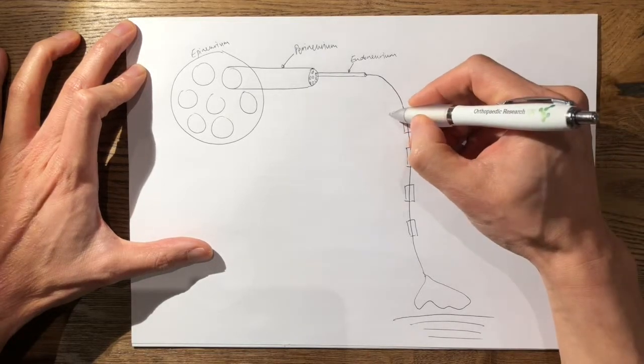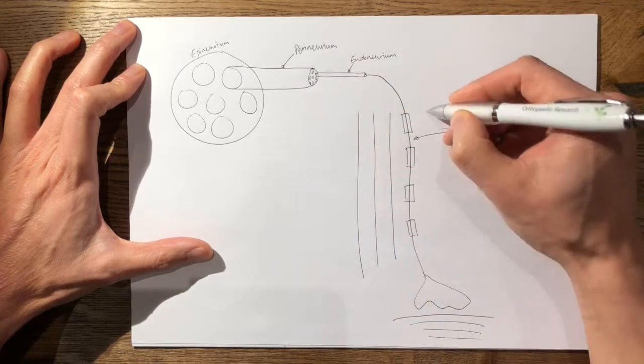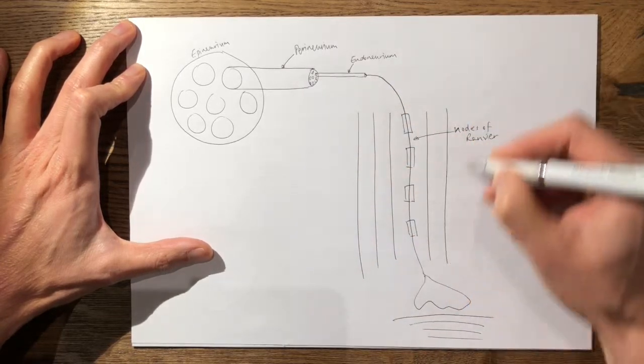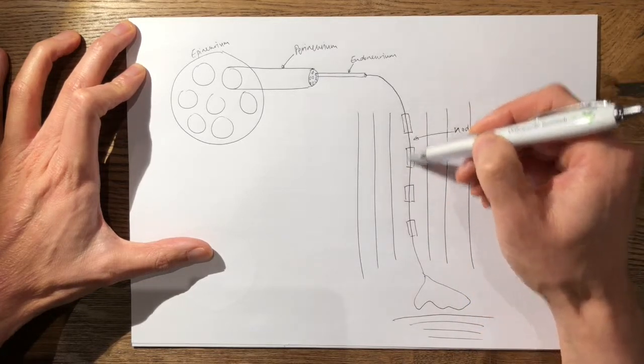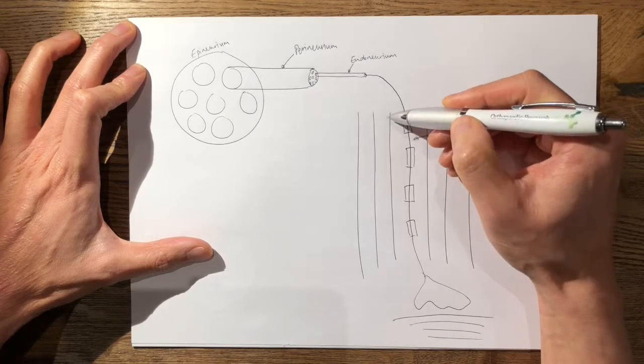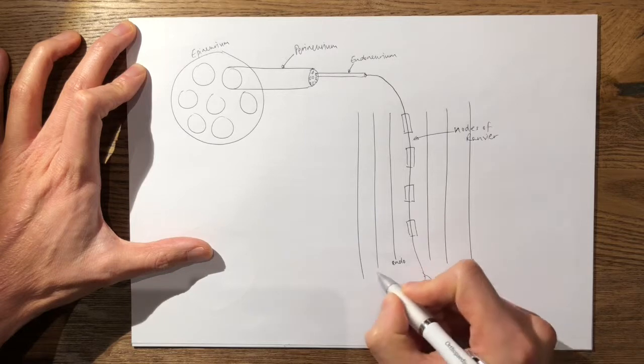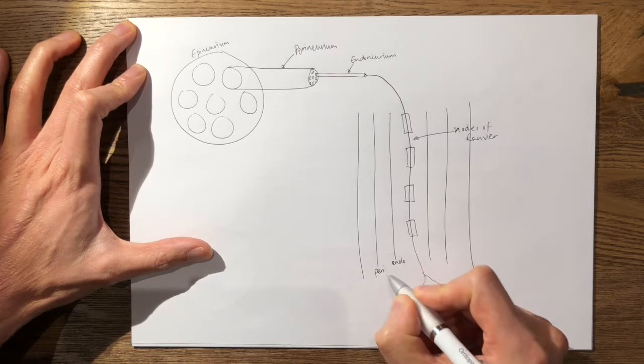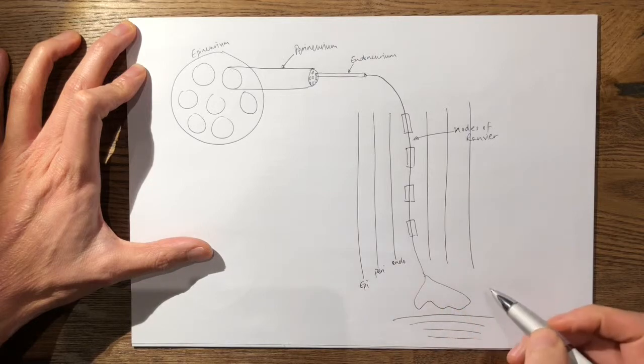So again, if I draw the coronal slice and the layers that I've mentioned before on either side. So if this represents the nerve fiber, you have your Schwann cells, your nodes of Ranvier. This represents the endoneurium, this represents the perineurium, and this represents the epineurium. And you have the same on the other side.